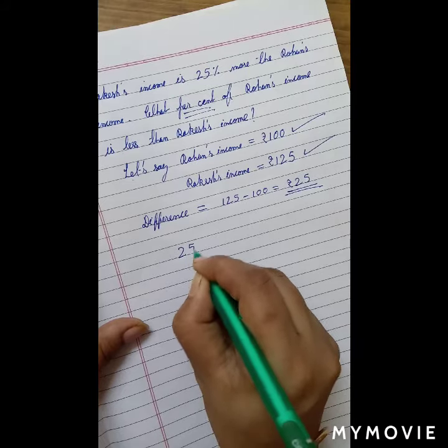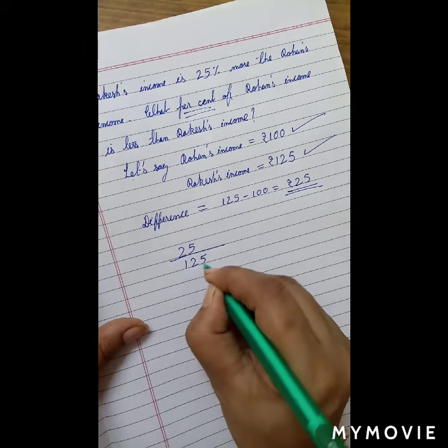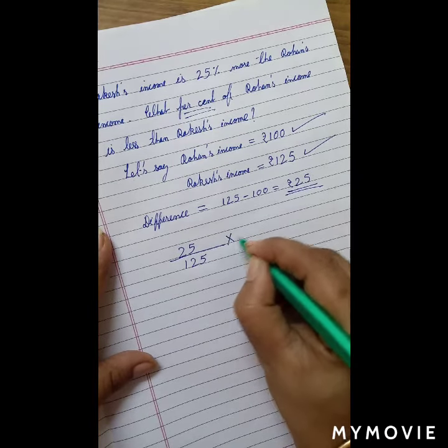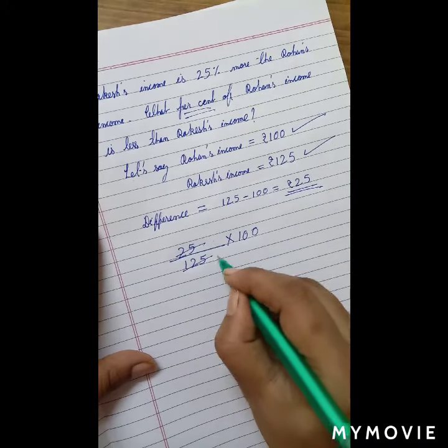So the difference is Rs.25 and it is being compared to Rakesh's income which is Rs.125. So let's find it out in terms of Rs.100. That's easy.